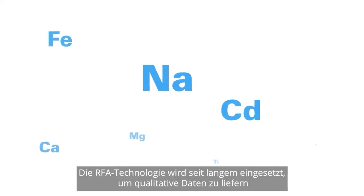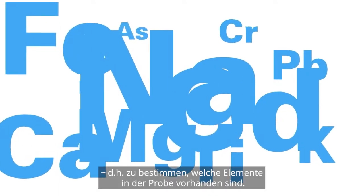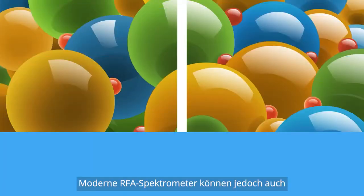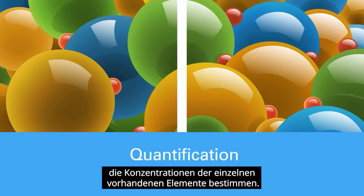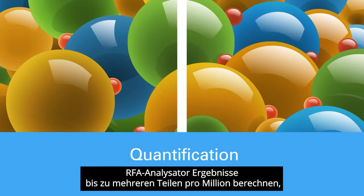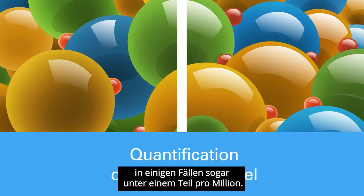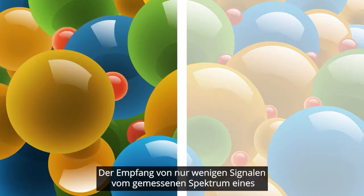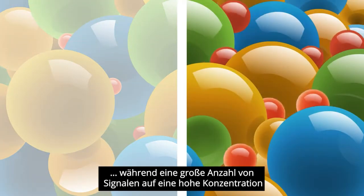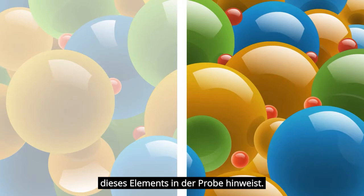XRF technology has long been applied to deliver qualitative data — determining what elements are present in the sample. Modern XRF spectrometers can also determine the concentrations of each element present. When you want quantification, an advanced XRF analyzer can calculate results down to several parts per million, in some cases even below one part per million. Receiving only a few signals from the measured spectrum of a specific element indicates a low concentration, while counting many signals indicates a high concentration of that element in the sample.